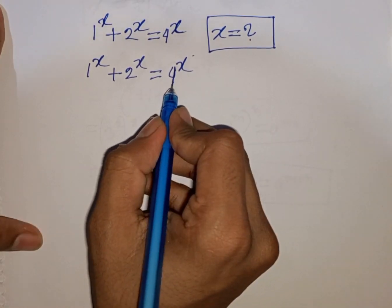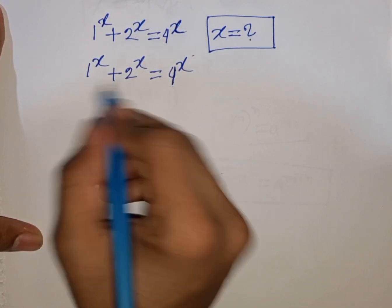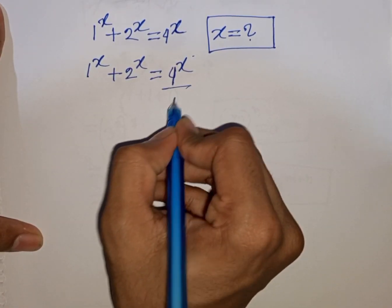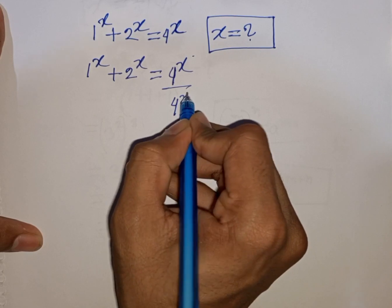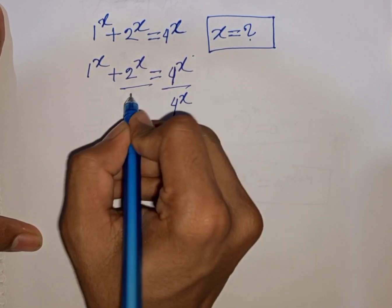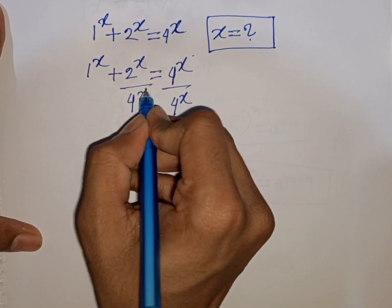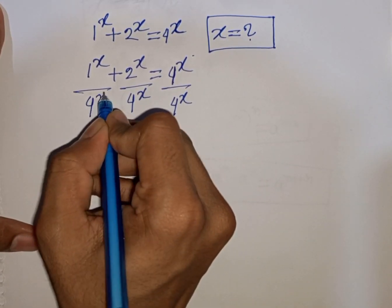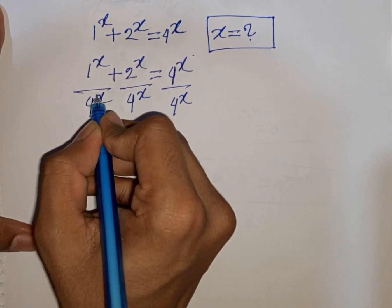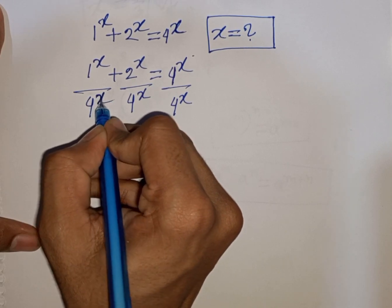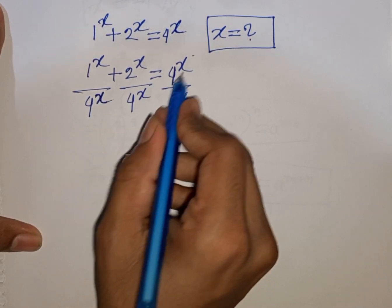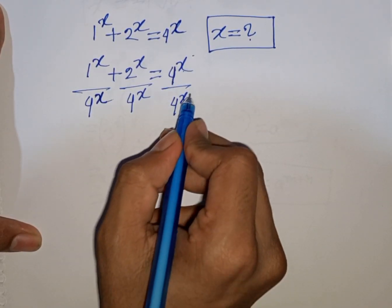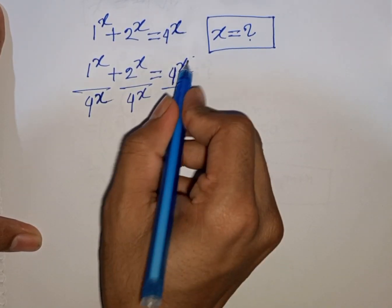Now we divide both sides by 4 power x. We divide by 4 power x on each term. Now we see this 4 power x and this 4 power x will be cancelled.